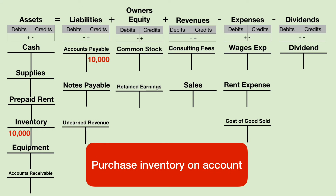In this transaction, we are purchasing inventory, but this time we are not paying cash — we are purchasing the inventory on account. Whenever we buy something on account, we're going to owe. Look at accounts payable: the plus sign is on the credit side. Whenever we owe more money, we put the number on the credit side. The fluent way to say this is: debit inventory, credit accounts payable.